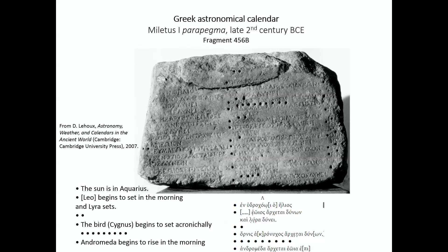This stone represents basically all the days of the year, each day represented by a hole. The way it worked was that you would have a peg that you inserted in the hole, and every day you moved the peg along the holes — that would enable you to keep track of the days of the year. This is not a civil calendar. It doesn't represent the months of the year the way they would have been reckoned. It is an astronomical calendar; it gives you astronomical information for each day of the year.